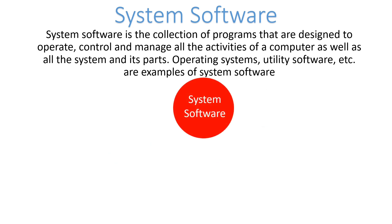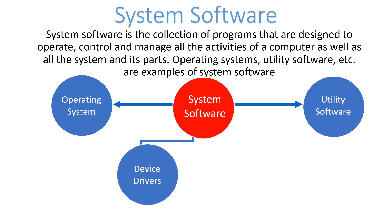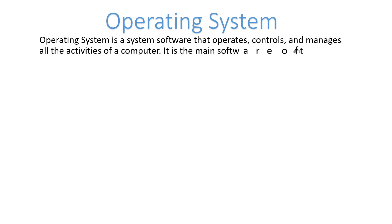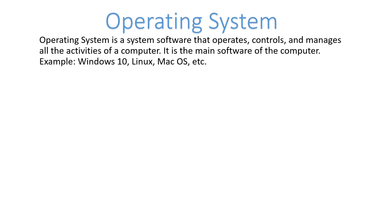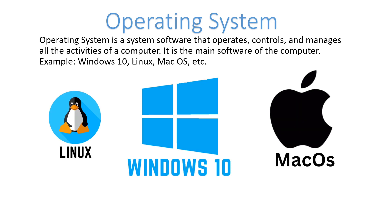System software is of four types: operating system, utility software, device drivers, and language processor. The operating system is the type of system software that operates, controls, and manages all the activities of the computer system. It is the main software of the computer system. Examples include Windows 10, Linux, and Mac OS.